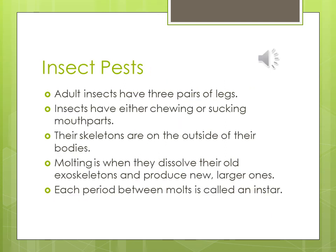Now we're getting into insect pests of turfgrasses. Adult insects have three pairs of legs. Insects either have chewing or sucking mouthparts — we'll figure out which is worse for turf grass. Their skeletons are on the outside of their bodies. Molting is when they dissolve their old exoskeletons and produce new, larger ones. Each period between molts is called an instar.